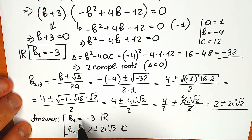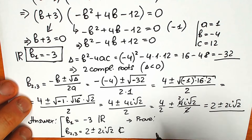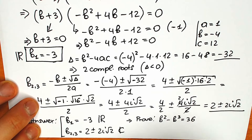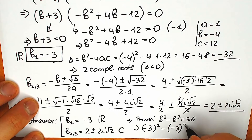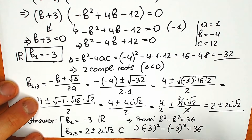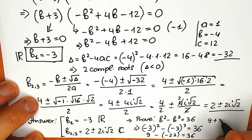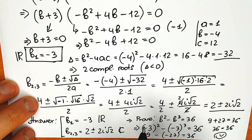Let's quickly check b₁ equals minus 3 as a proof. Our original equation: b squared minus b cubed equals 36. Plugging in minus 3: (minus 3) squared minus (minus 3) cubed equals 9 minus (minus 27), and the two negatives make a plus, giving us 9 plus 27 equals 36, which is absolutely correct. Our root is verified.